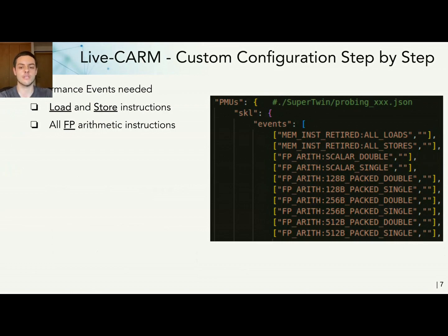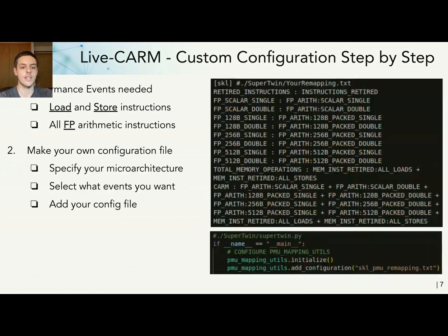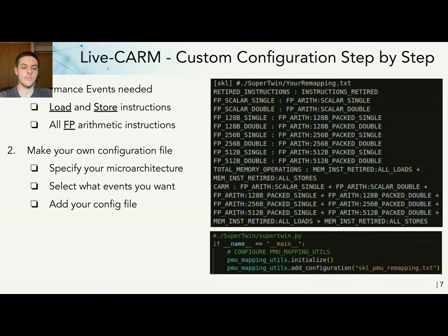First, you will want to find your performance events. This can be obtained from the SuperTwin description, which is in a JSON file. You'll want to find events that give you all your load and store instructions and all your floating point instructions. Then you can make your own PMU mapping configuration file, where you will specify your microarchitecture — in this case a Skylake system — and then specify all the different events that you want. For the CARM, you will have to declare the CARM name and put all the events needed next to it. Finally, just add your configuration file to SuperTwin.py.